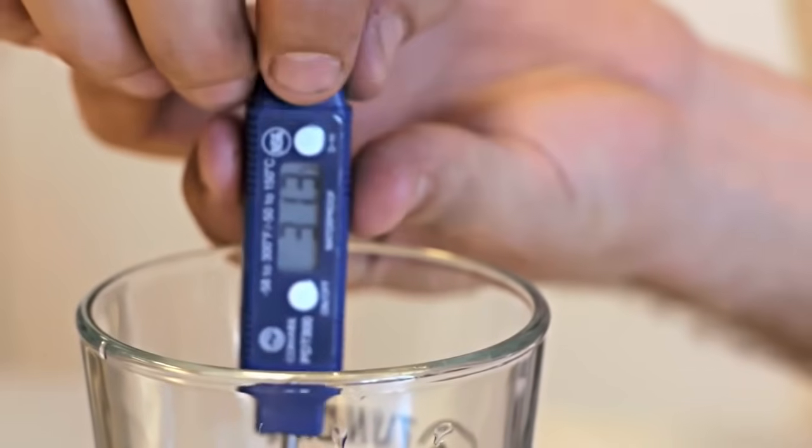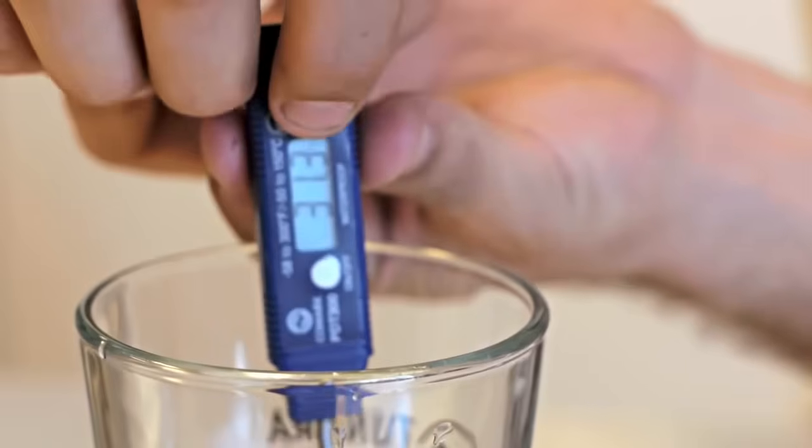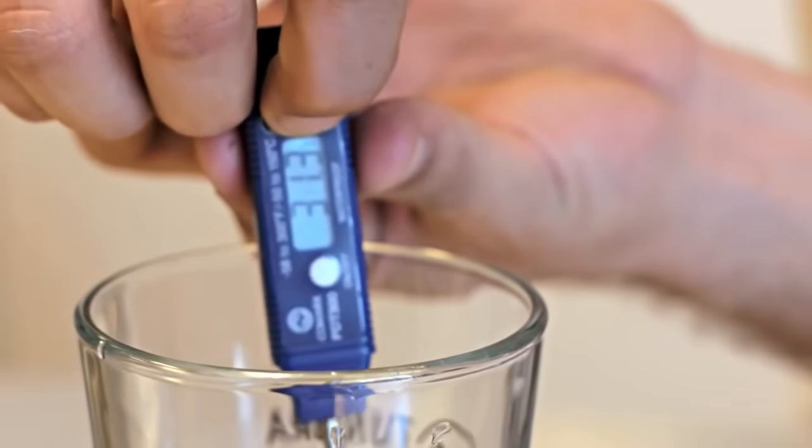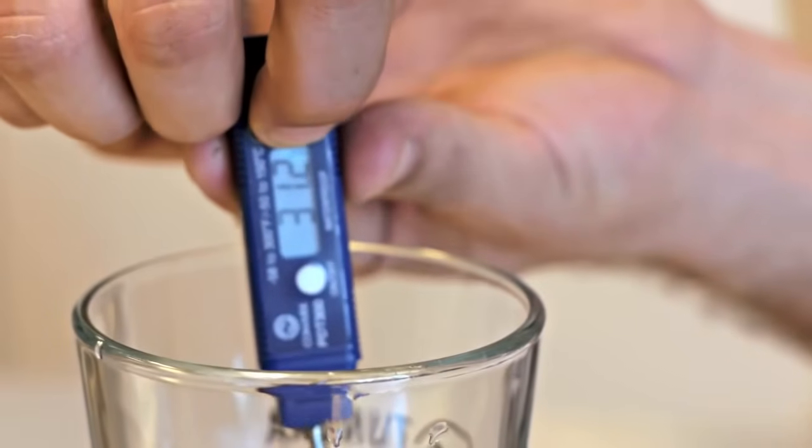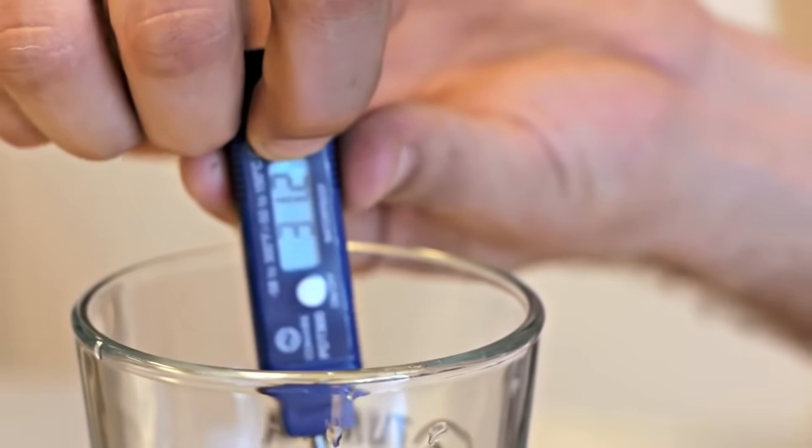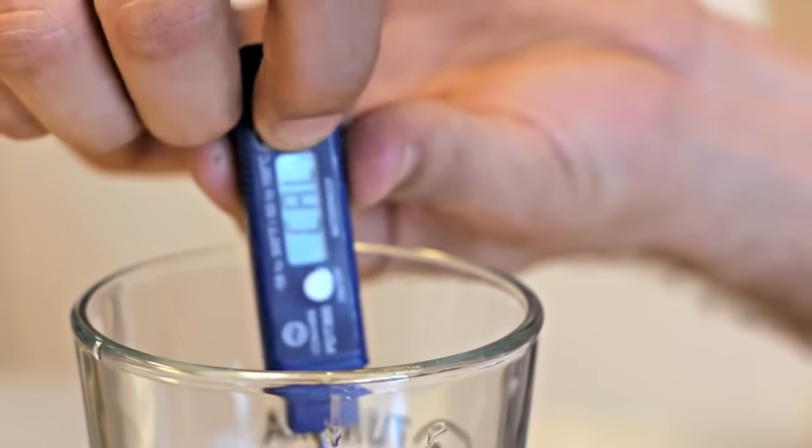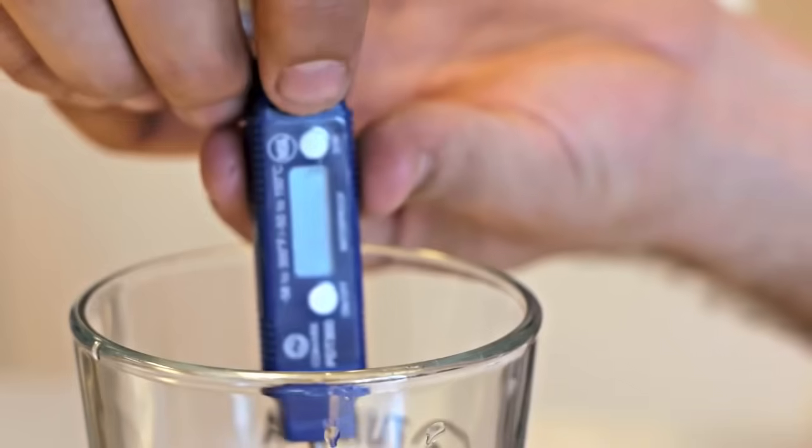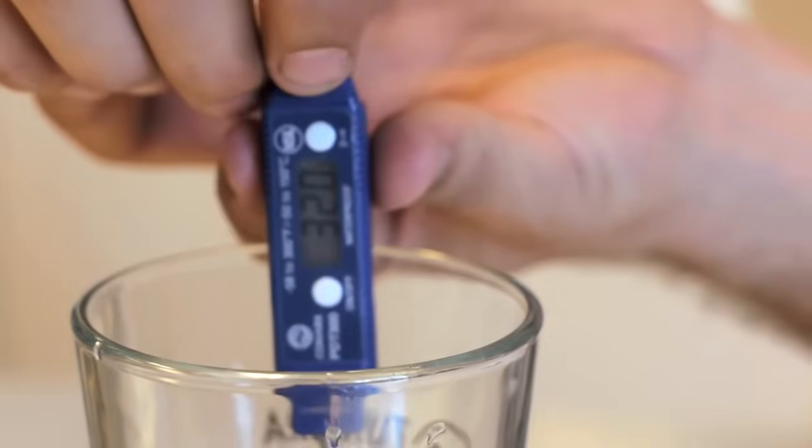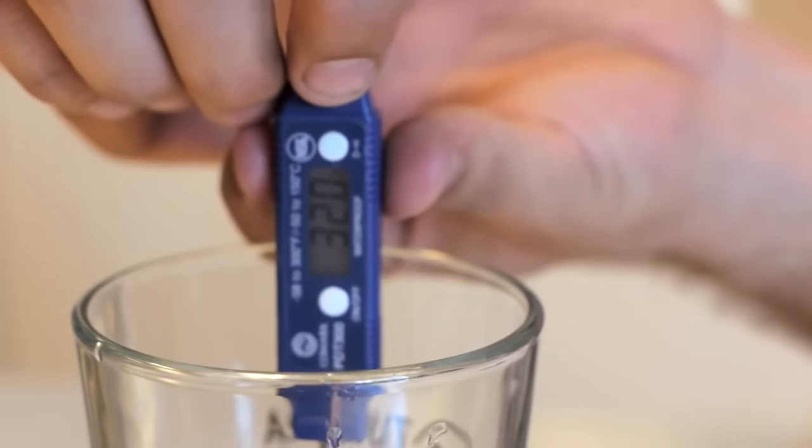To recalibrate this, there's this DH button. I want to hold that down for about eight seconds and then it's going to start to flash, C-A-L, for about two seconds. That means it's recalibrating. Now we get a new reading of exactly 32 degrees.